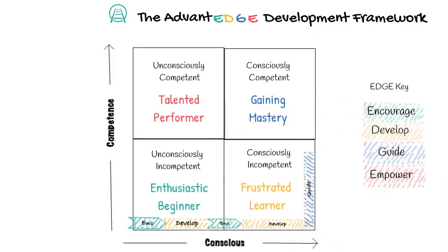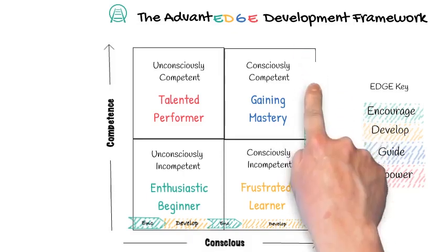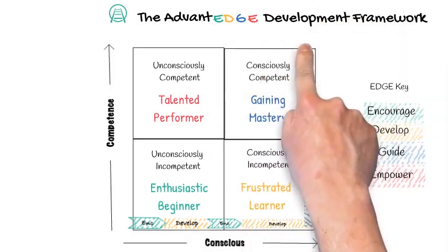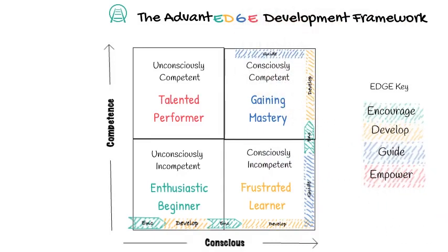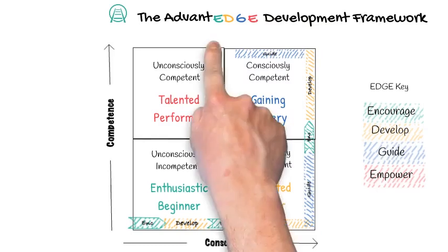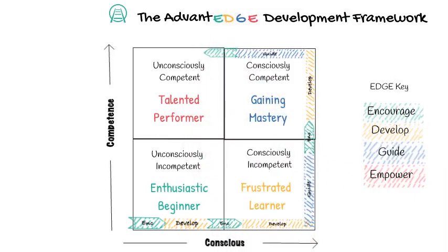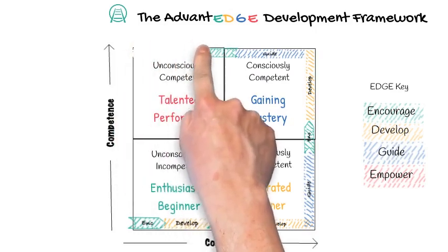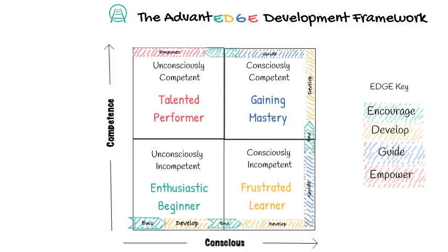Once they know the skills and how to do them, they need guiding — less teaching and more coaching, gently being nudged in the right direction in a safe environment, and encouraged again to break through to gaining mastery. Then layering more skills and knowledge through sharing and teaching, until they have gained sufficient skills to be guided through practice in real life. They are then encouraged to continue practicing and gaining mastery, empowered with all the resources, reminders, templates, and props they need to continue their own development. Through the Advantage Development Framework, you can take someone from enthusiastic beginner to talented performer.